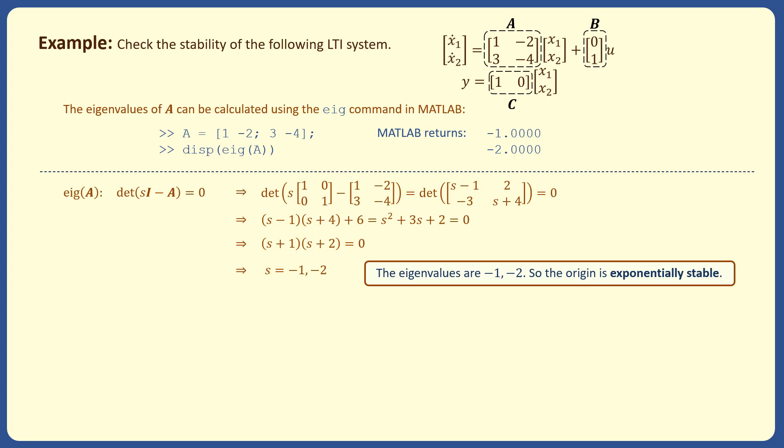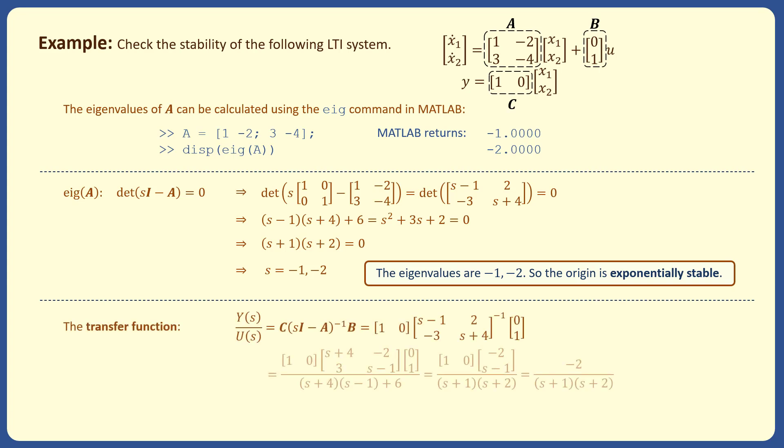We also know that the eigenvalues of A are the same as the poles of the transfer function of the system. We can calculate the transfer function of the system and then find the poles, which are at minus 1 and minus 2. So, the origin is exponentially stable.